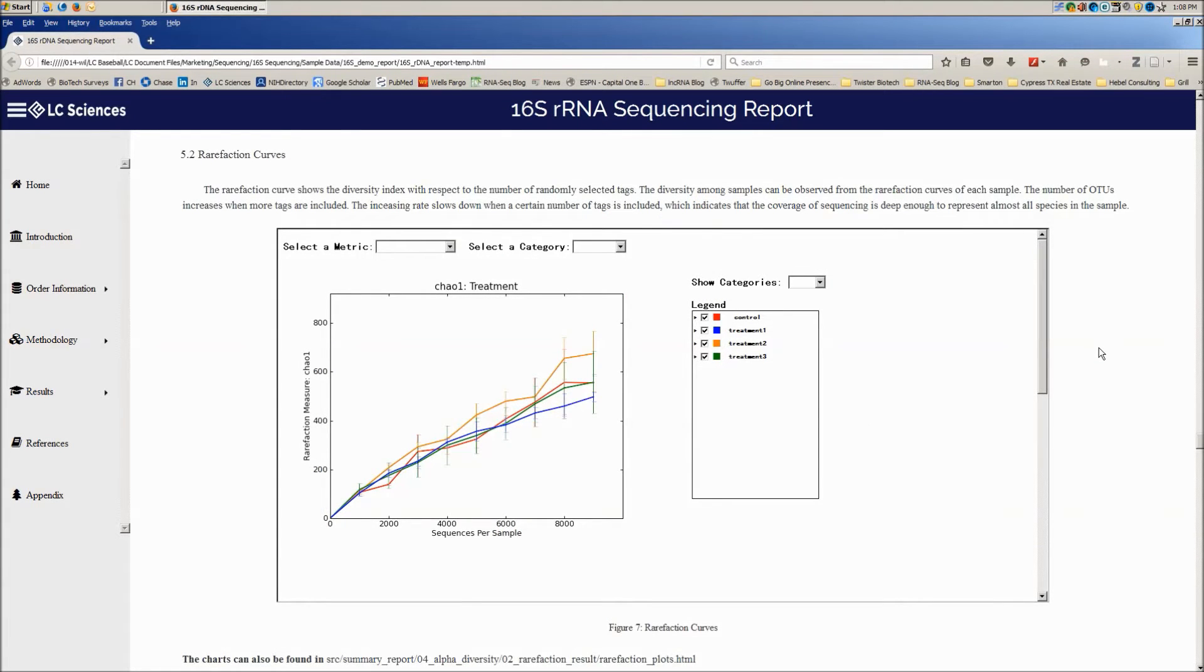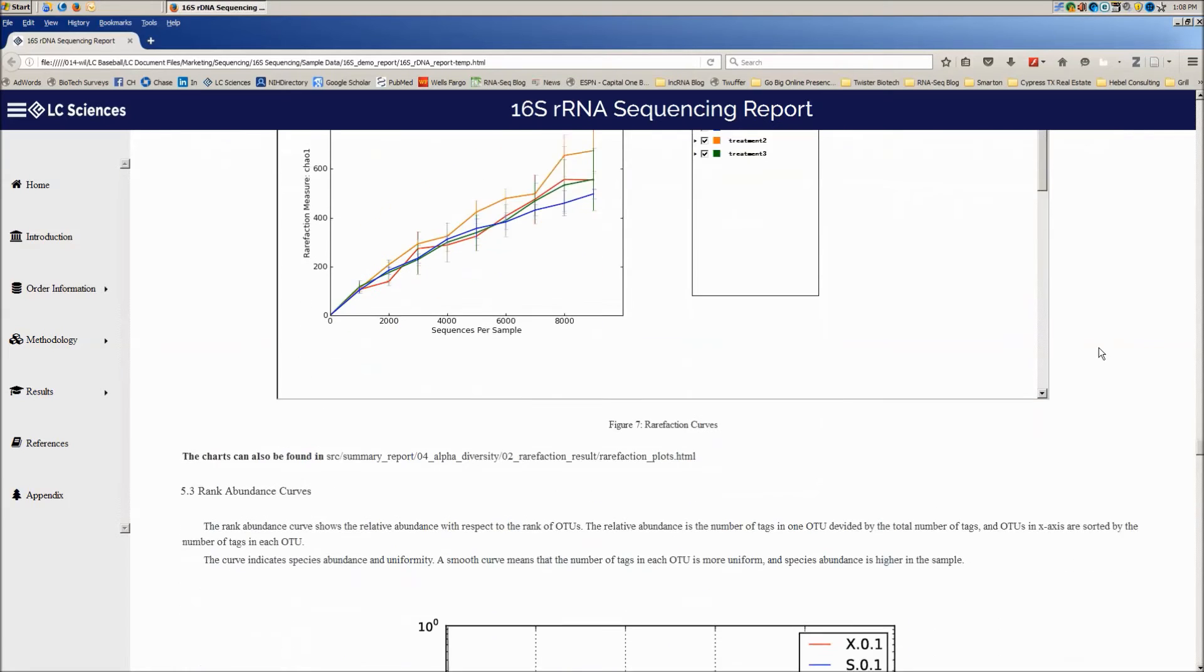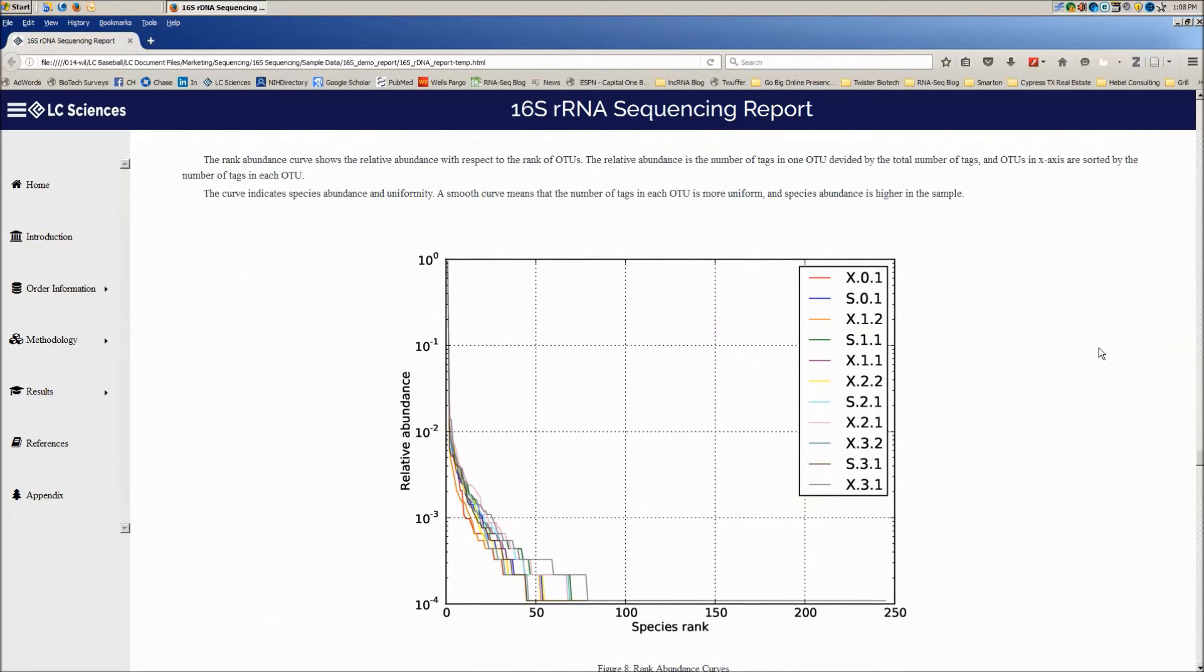The diversity among samples can be observed from the rarefaction curves of each sample, and the rank abundance curve indicates species abundance and uniformity.